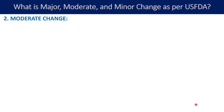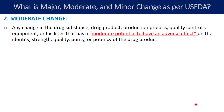Let us talk about moderate change, the second type of change according to the FDA. The definition of moderate change is: any change in the drug substance, drug product, production process, quality control, equipment, or facilities that has a moderate potential to have an adverse effect on the identity, strength, quality, purity, or potency of the drug product. The important term here is moderate potential, whereas in major change the term is substantial potential.